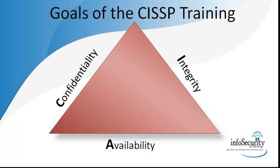What I like about this new requirement is that ISC² has put a lot of emphasis on the confidentiality, availability, and integrity of information. In information security, what we are trying to do is protect the confidentiality, integrity, and availability of information — whether you are doing cryptography, physical security, or business continuity.